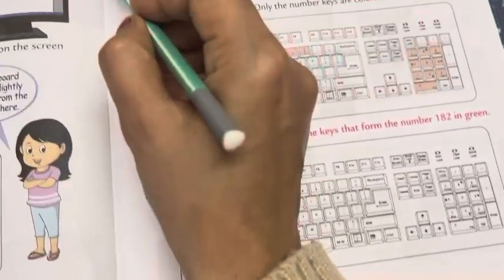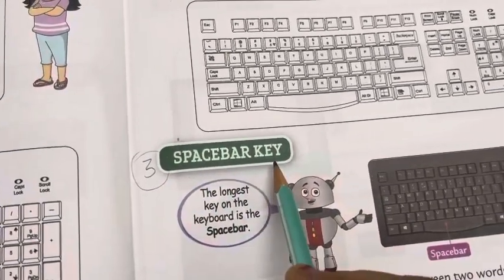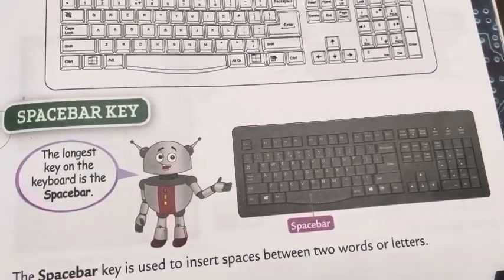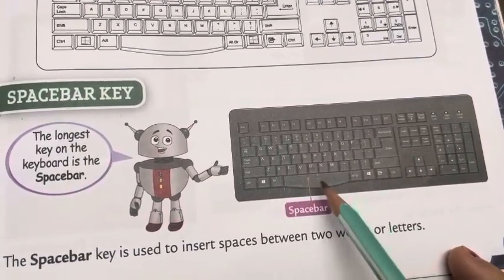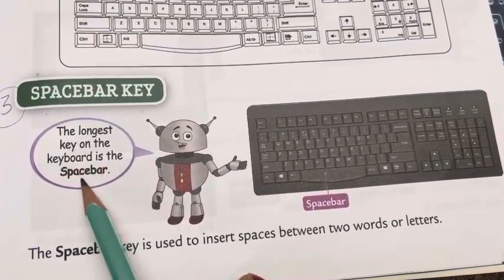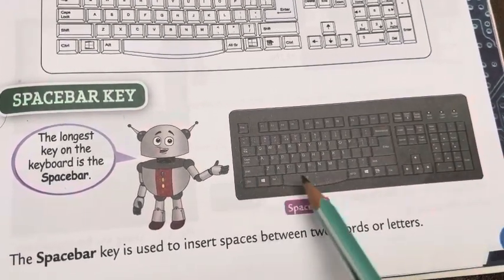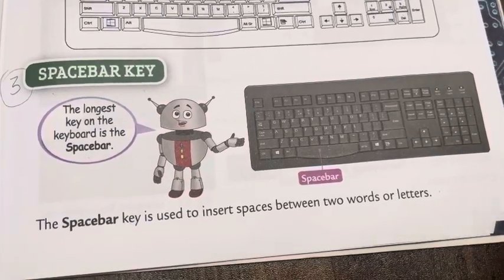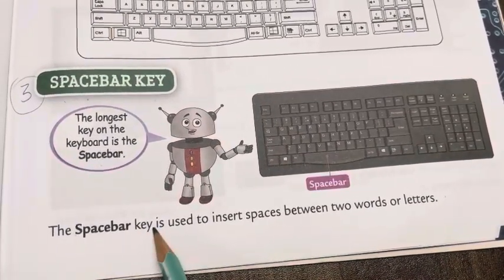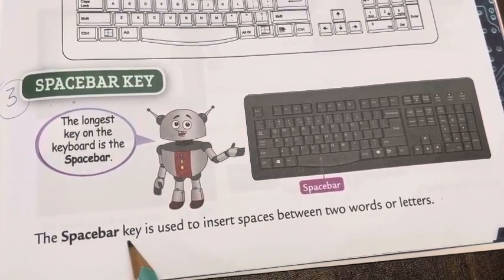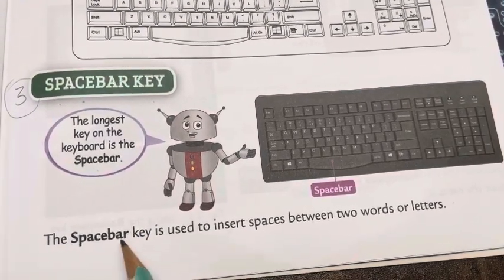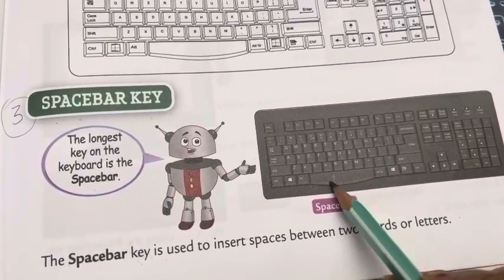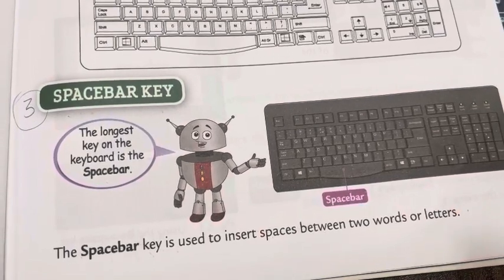Space bar key: this is the space bar key. It is a long bar present at the bottom of the keyboard. The longest key on the keyboard is the space bar. The space bar key is used to insert a space between two words or letters. For example, in the sentence 'the space bar key is,' there is a space between each word — we use the space bar on a computer to provide that space.